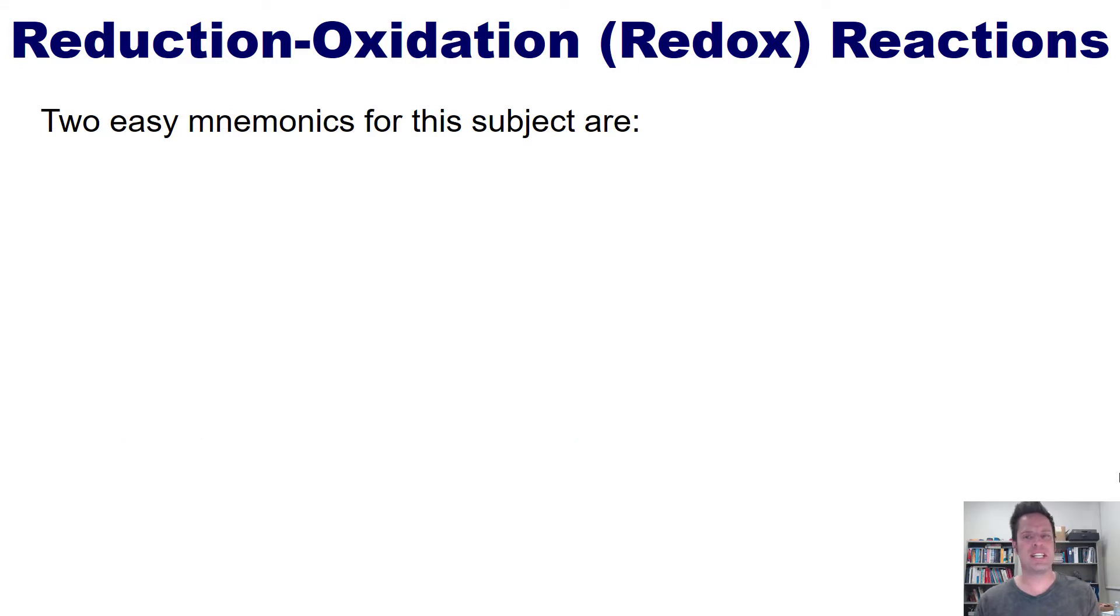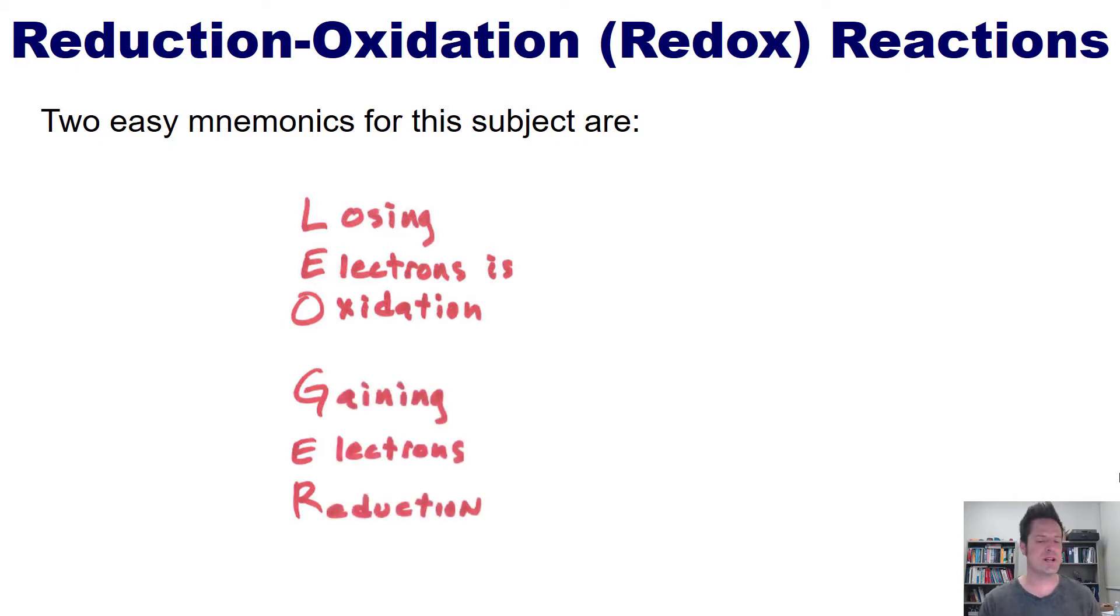Two easy and commonly used mnemonics to remember this subject are Leo the lion says GR, where Leo stands for losing electrons is oxidation, and GR stands for gaining electrons is reduction. Or alternatively, oil rig, where oxidation is losing electrons, and reduction is gaining electrons.